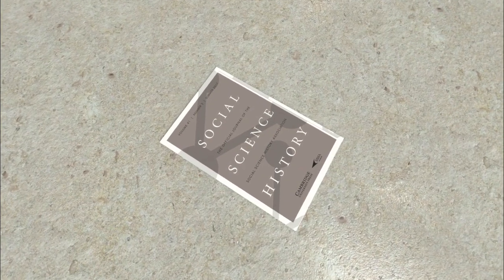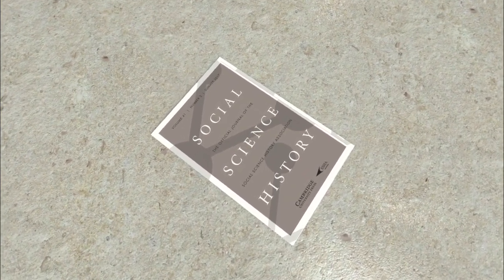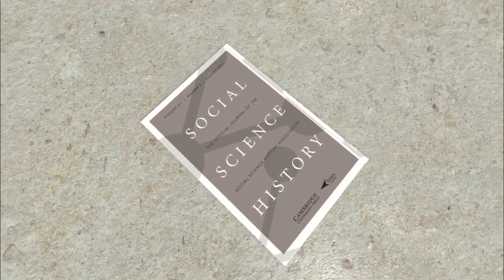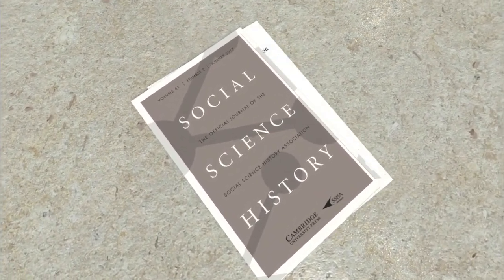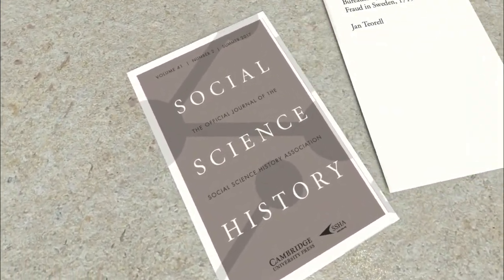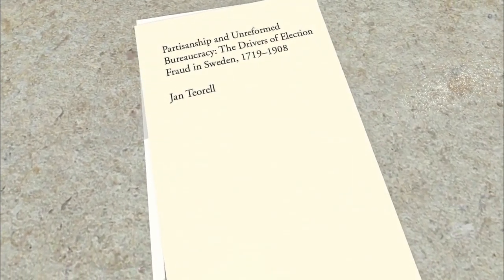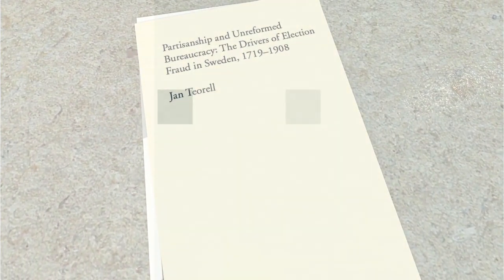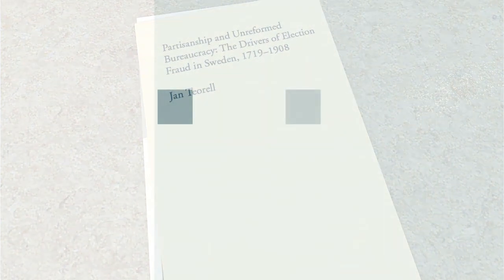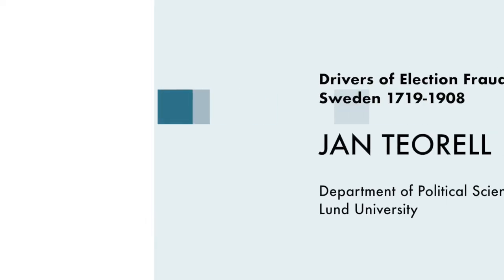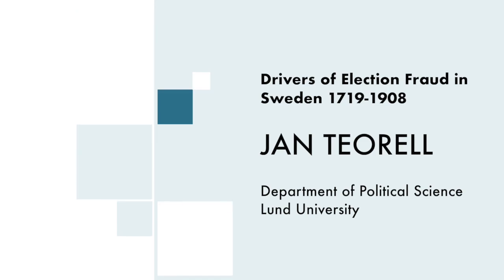This is a presentation of the article 'Partisanship and Unreformed Bureaucracy: The Drivers of Election Fraud in Sweden, 1719–1908,' written by Professor Jan Theorell.